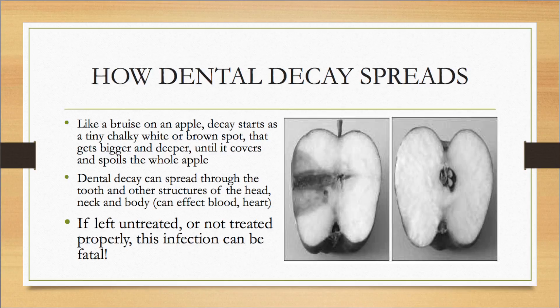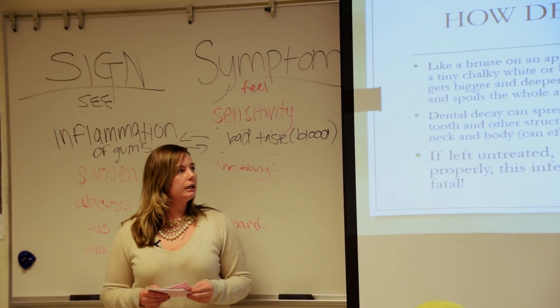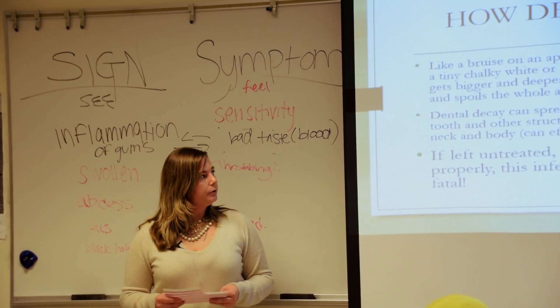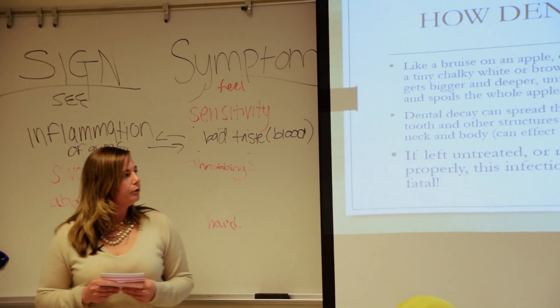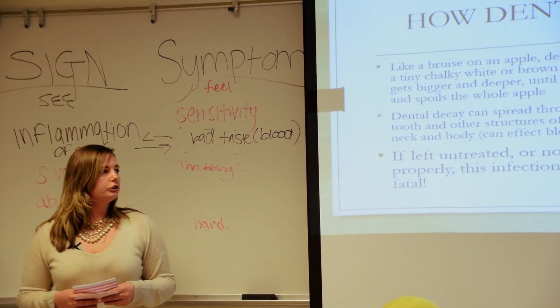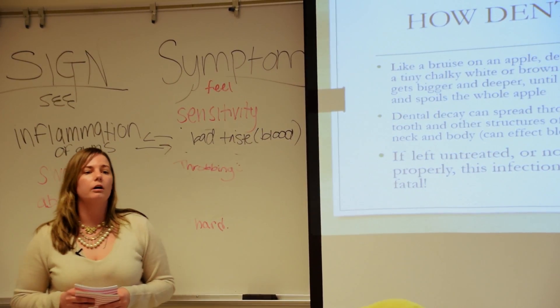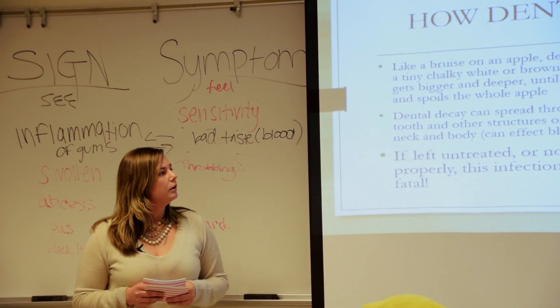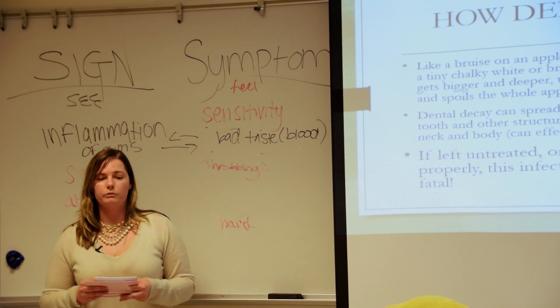How does decay spread? Decay spreads just like in an apple — it starts small, gets deeper, gets bigger, and keeps going, just like how rot spoils the whole apple. If we allow it, it could go on to other structures of the body. It could affect the blood, the heart, the head, the neck — and if left untreated, it could be fatal.